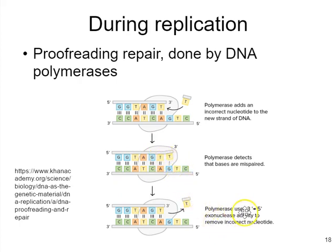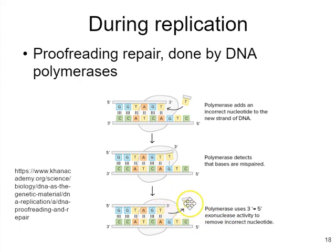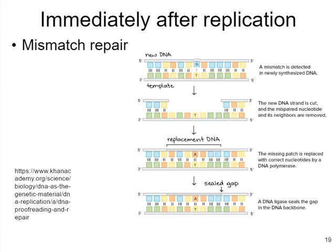Then it will use what's called three-to-five prime exonuclease activity. Restriction enzymes are endonucleases, but there are also exonucleases that chop DNA out from the ends. The removal of that thymine is an example of exonuclease activity, traveling three to five because it's going backwards relative to synthesis. DNA polymerase will take that out, then restart and hopefully put in a C instead. That's called proofreading — it happens all the time and is very widespread in nature.